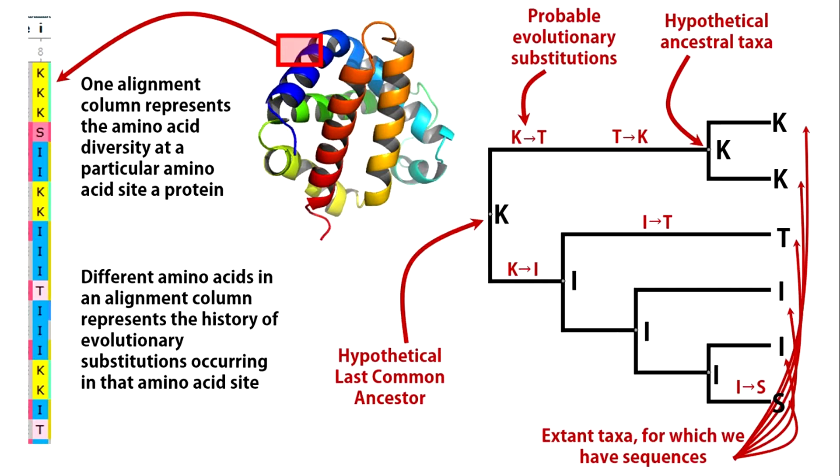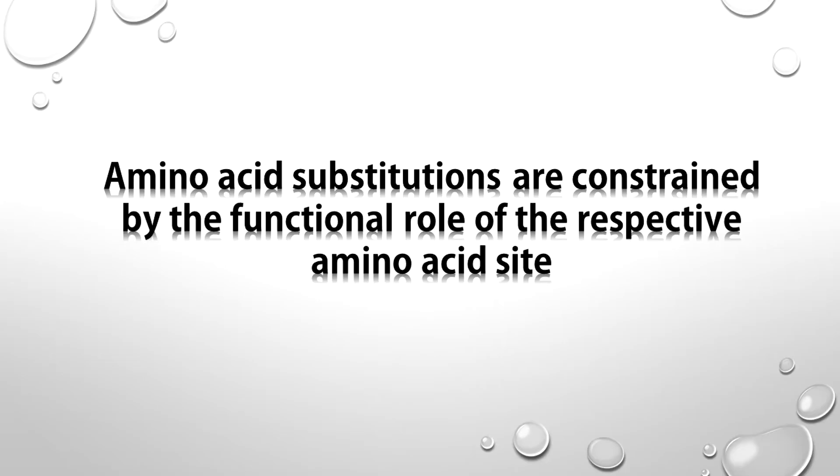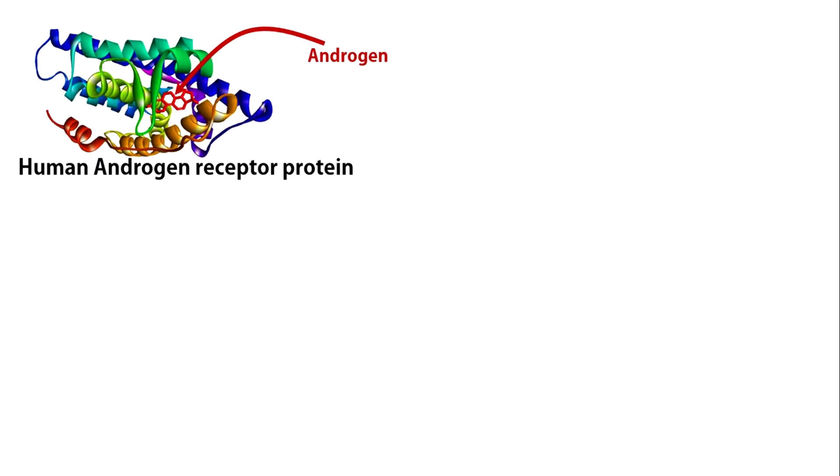So you see that in the course of evolution amino acid sites undergo evolutionary substitutions. But remember that this process is not random. Amino acid substitutions are constrained by functional role of that amino acid site.